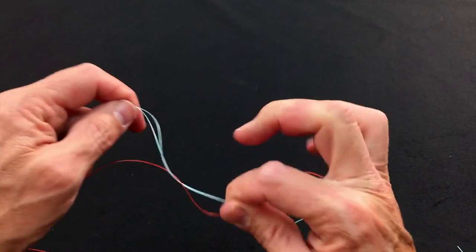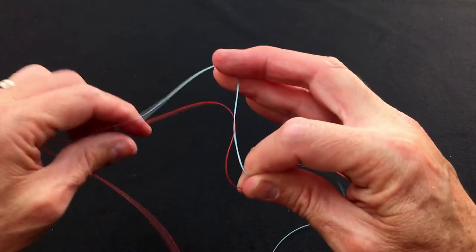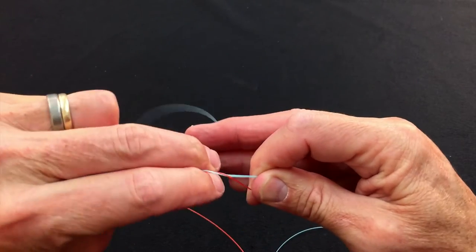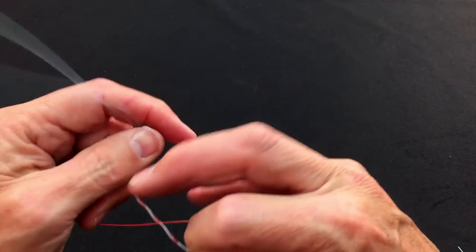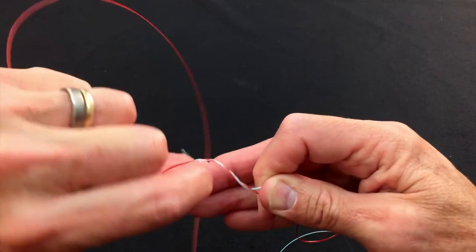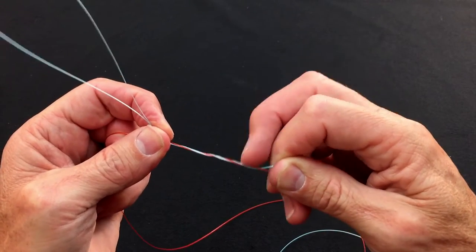Now you're just going to fold this end through four times, working away from the pinch. One, two, three, four wraps away from the pinch here.